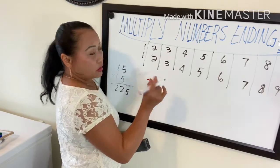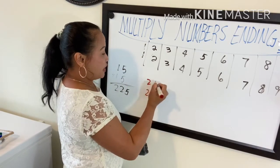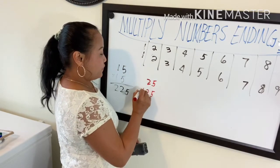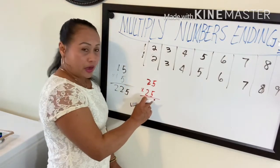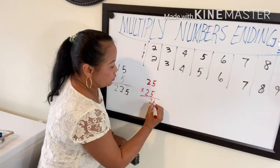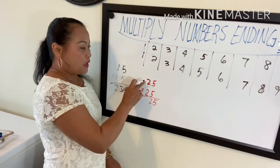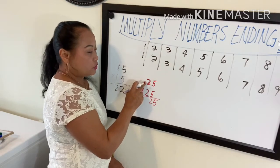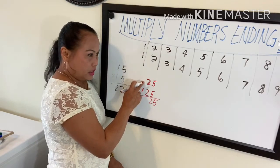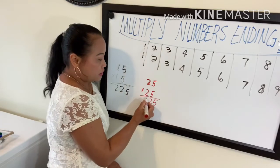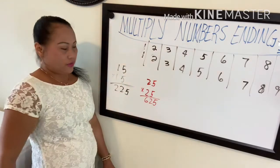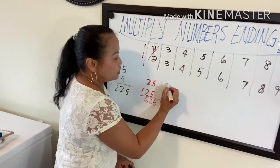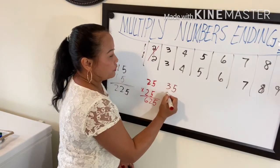Now for 25 times 25: five times five, bring down 25. Then add one to two — two becomes three — and three times two is six. So the answer is 625.